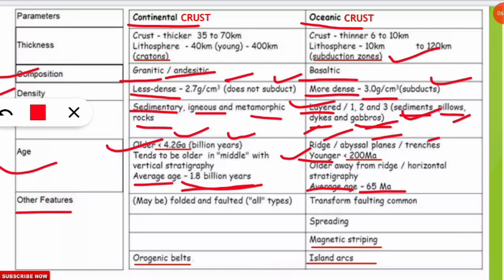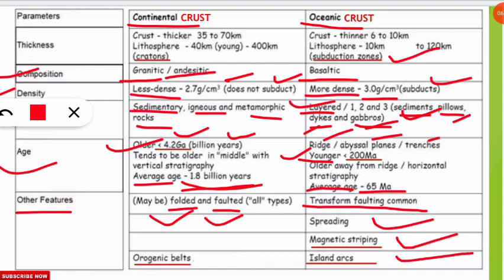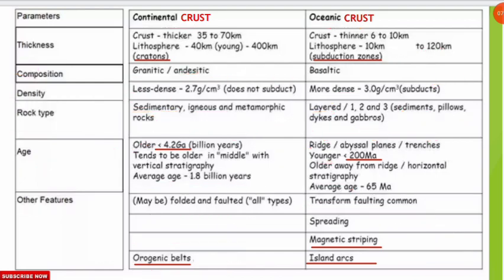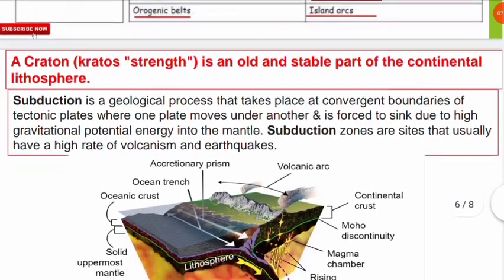Other features of continental crust include folded and faulted rock types. Transform faulting is common in oceanic crust. The oceanic crust is in a spreading form, having magnetic stripping and island arcs. The continental crust also has an important feature called the orogenic belt, which will be explained in the next slide.